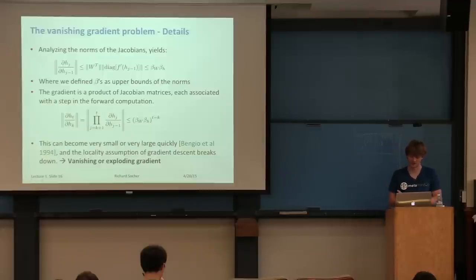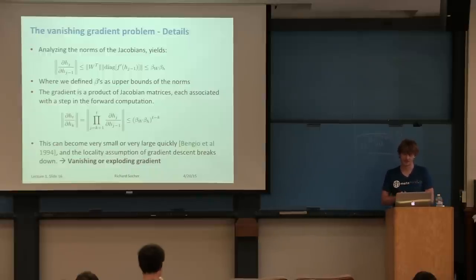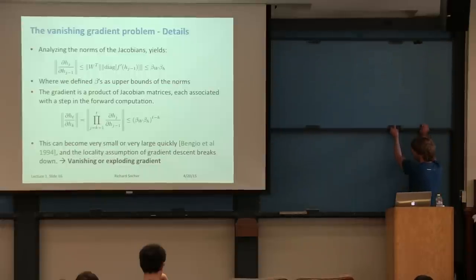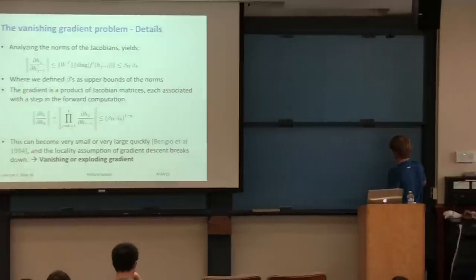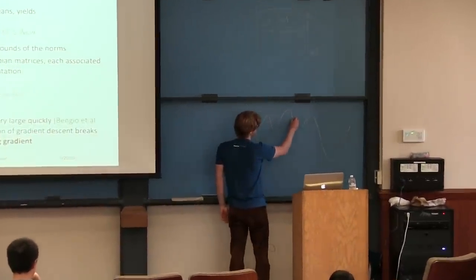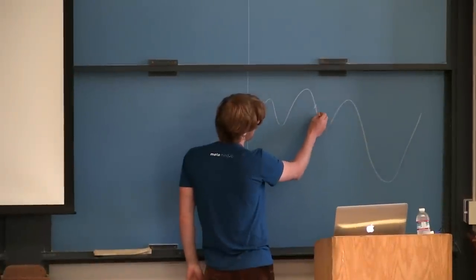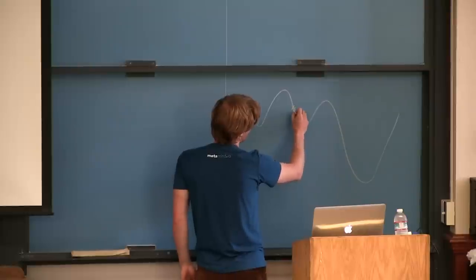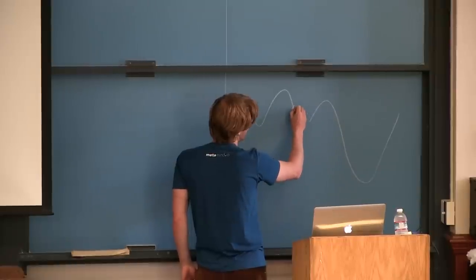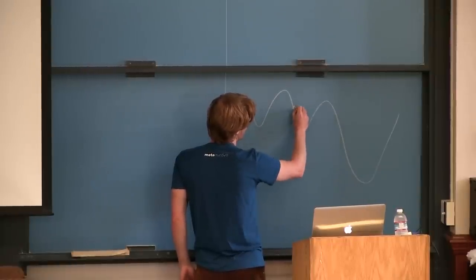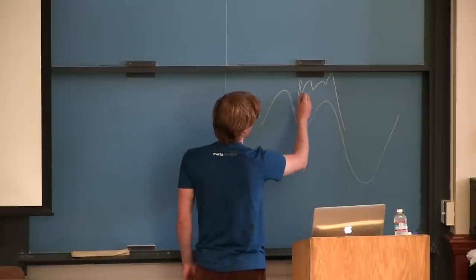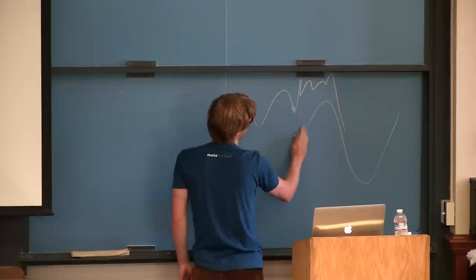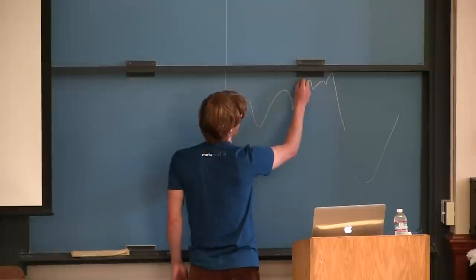Rectified linear units, which are just linear when input is larger than zero, can get very large and never cap as a sigmoid does, which breaks the locality assumption of gradient descent. When we make a gradient step, we assume one small step minimizes the objective, but with exploding gradients the landscape is so jagged that one step sends you somewhere far away with much larger error. The mathematical reason for exploding gradients is that if the norm of W is much larger than one — say it's 2 — and you have 195 time steps, you get 2^195, which blows up very quickly.